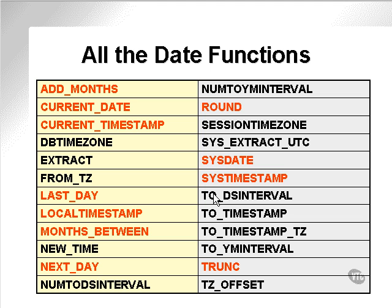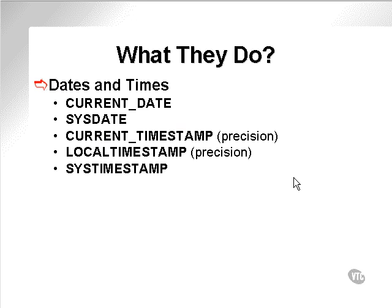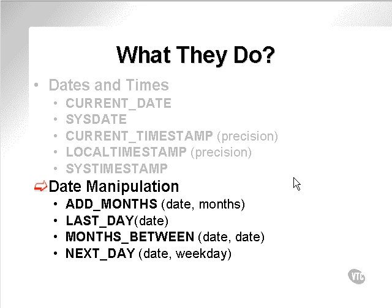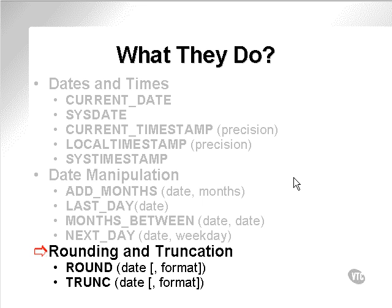All the date functions — once again, all the ones I'm interested in are marked off in red. The black ones I'm not even going to discuss at this point. What do these date functions do? I've divided the date functions up into three separate sections: dates and times, date manipulation, and rounding and truncation — the round and trunk functions.